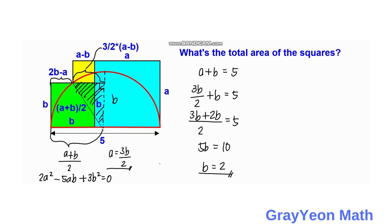Next, we find the value of a. Since a = 5 minus b, we have a = 5 minus 2, so a equals 3 units.